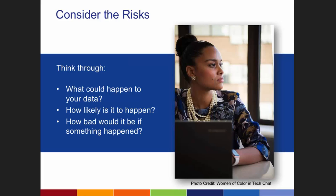Once you have your information categorized and risks identified, look at what safeguards you have in place — password policies, backup procedures, and so on — that protect against those risks. Then identify where there might be gaps or insufficient safeguards based on how you've classified your information.